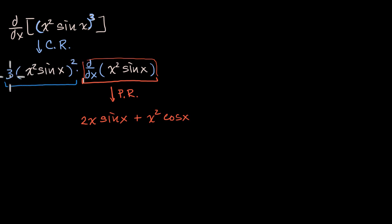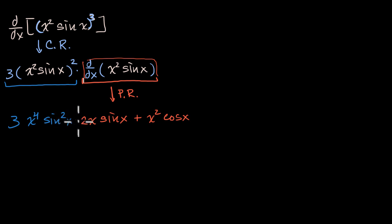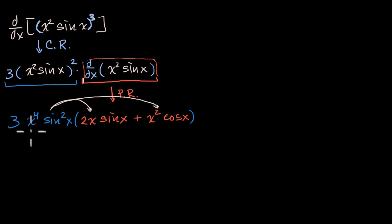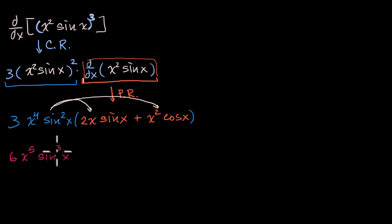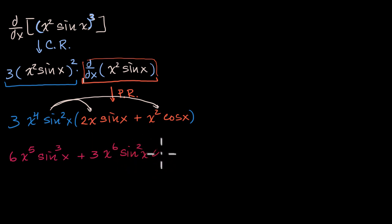All of this I could rewrite as three times — if I have the product of things raised to the second power, I can take each of them to the second power and then take their product. So x squared squared is x to the fourth, and sine of x squared is sine squared of x. Distributing everything out: three times two is six, x to the fourth times x is x to the fifth, sine squared of x times sine of x is sine of x to the third power. Plus three, x to the fourth times x squared is x to the sixth, times sine squared of x cosine of x. That's one strategy — chain rule first and then product rule.